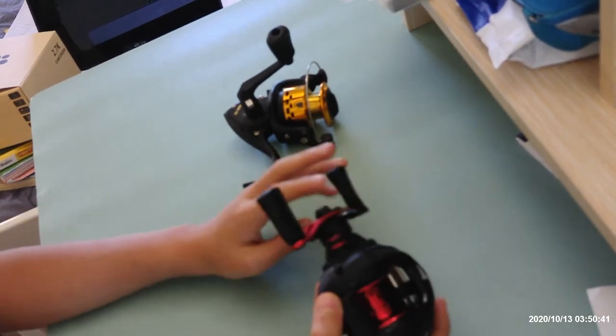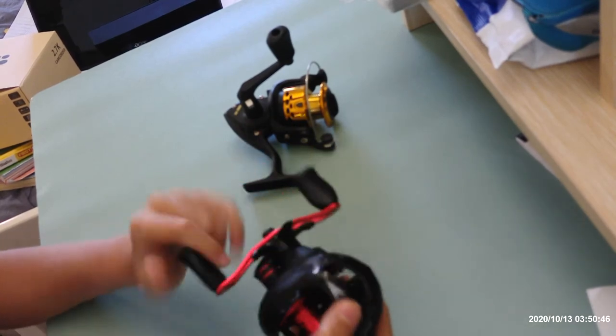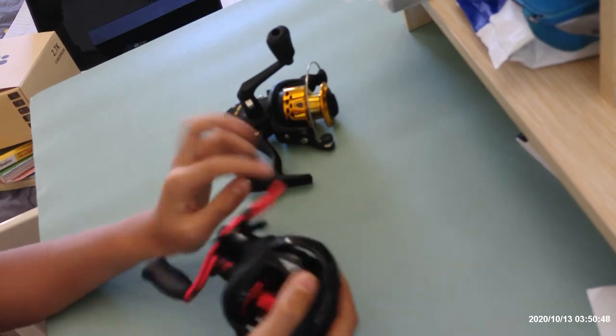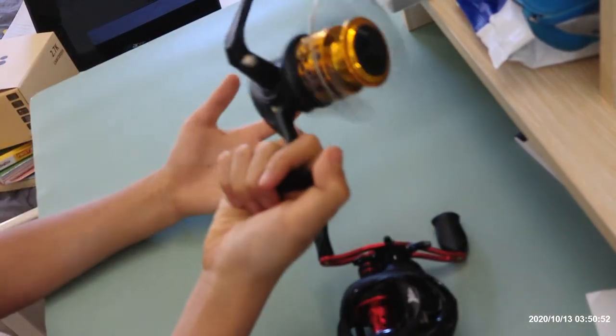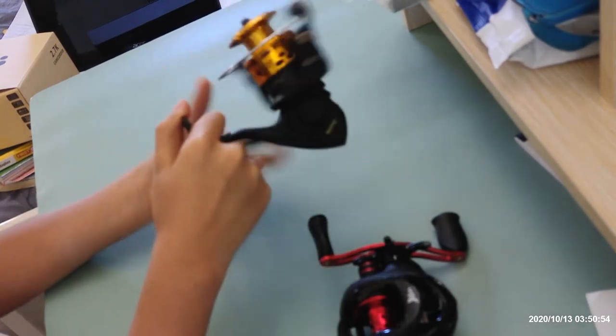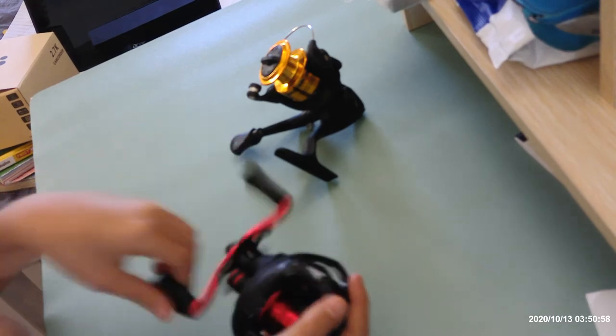The spinning reel I got for like 10 bucks. I like the baitcaster more because you have more options and it has a higher gear ratio.